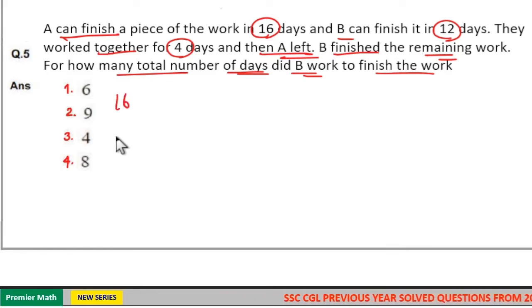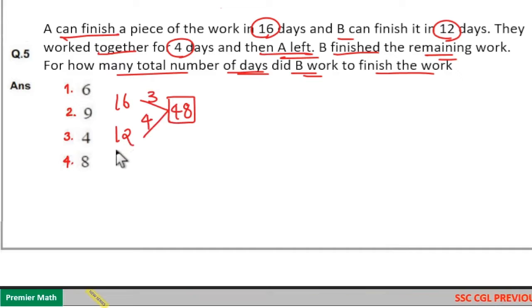Here A can finish a work in 16 days. B can finish it in 12 days. Both are doing the same work, so take the LCM. LCM is 48. 16 goes 3 times in 48. 12 goes 4 times in 48.